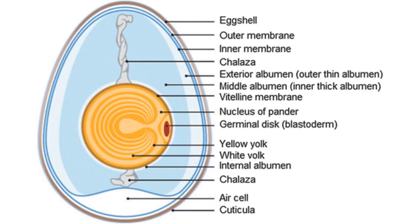The shell is produced by the shell gland or uterus of the oviduct, and has an outer coating called the bloom or cuticle. The cuticle somewhat seals the pores and is useful in reducing moisture losses and in preventing bacterial penetration of the egg shell. Most of the cuticle is removed from table eggs when they are mechanically washed.